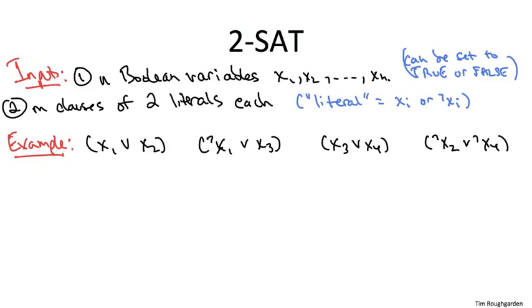Because we're interested in whether all of the clauses can be simultaneously satisfied, one often joins the clauses using logical and symbols. That's what this upside down V denotes. So that's what a 2SAT instance looks like.